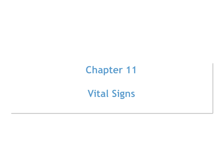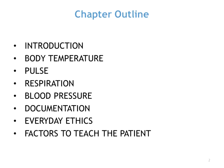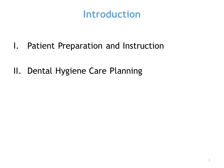This is Chapter 11 of Wilkins. We're going to discuss vital signs, which we discussed briefly in class. The chapter outline is in your textbook. We're going to talk about temperature, pulse, respiration, blood pressure, and documentation — always documentation.